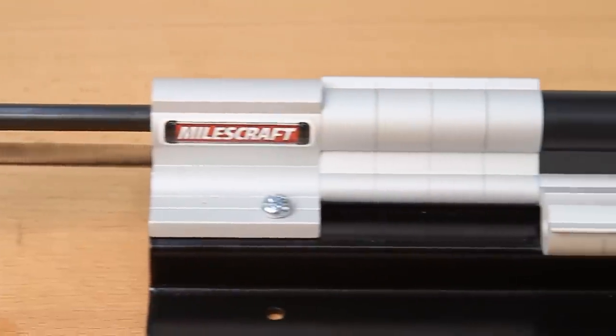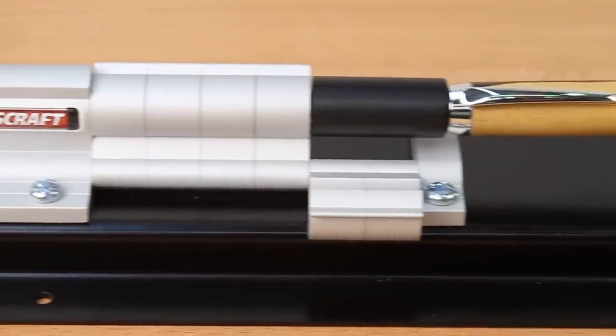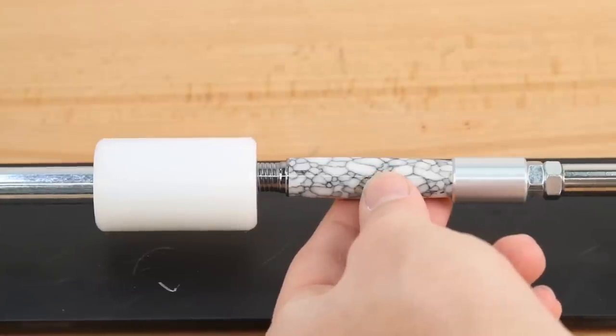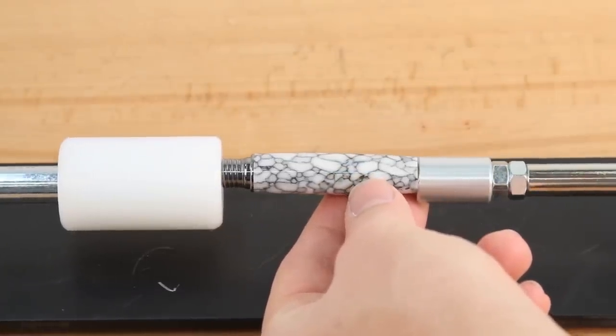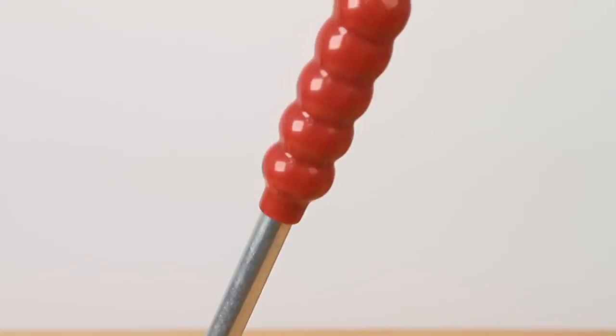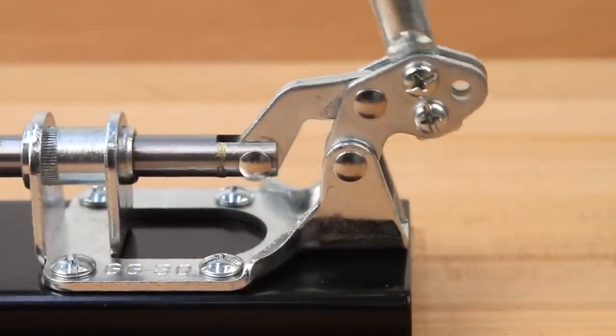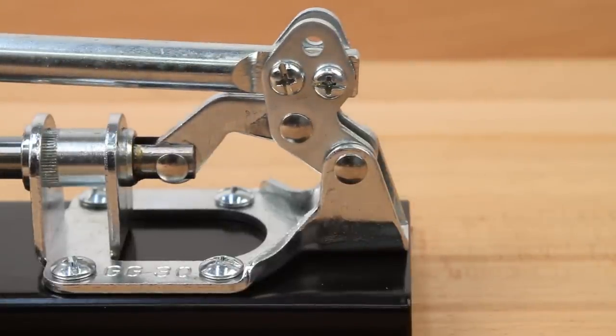The aluminum spacer design also eliminates the tendency for the RAM to creep during use, which is common to other pen press jigs. The solid steel handle with ergonomic grip provides up to 300 pounds of pressure, ensuring durability and dependability.